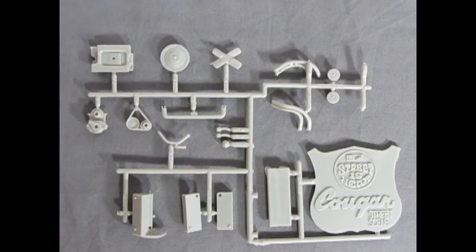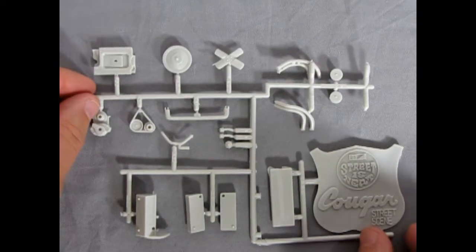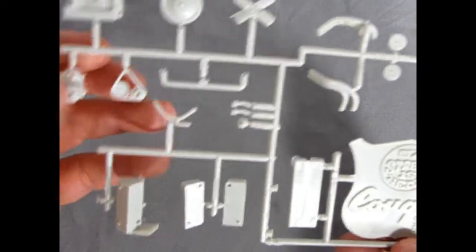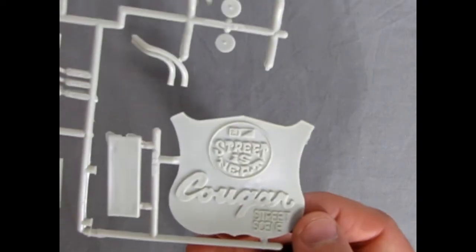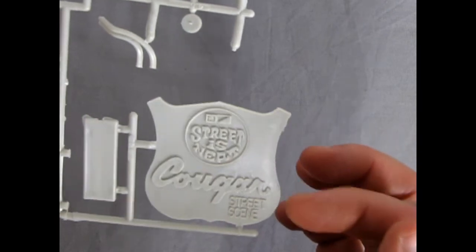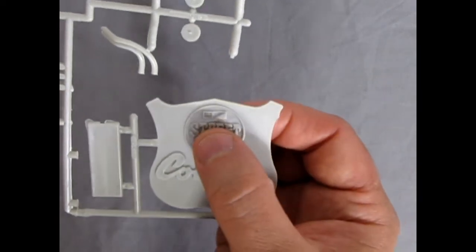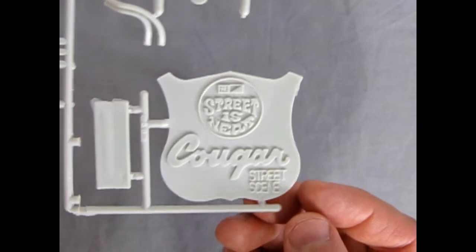Here's a look at the components that make up our 429 engine, as well as some other components on here. And again, you can see that the detail is pretty nice. This is a pretty interesting thing. The street is neat cougar plaque for the street scene. And again, there's the MPC logo up there.